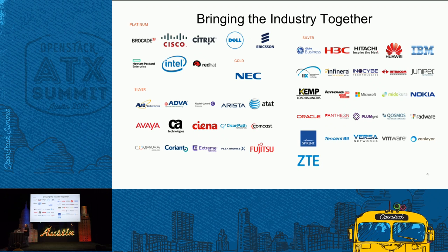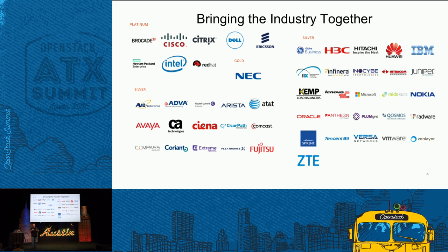So what is Open Daylight trying to do? Open Daylight is really trying to bring the industry together around software-defined networking and making your networks more programmable. Very similar to OpenStack and what's happening in the cloud industry, we're really trying to bring everybody — users, vendors, whoever is interested — together to really turn your network into something that is very programmatic.